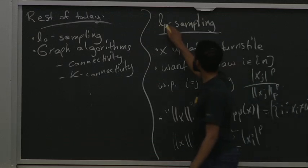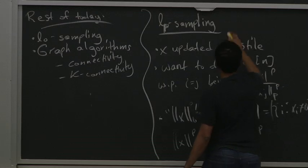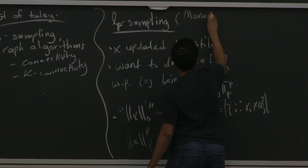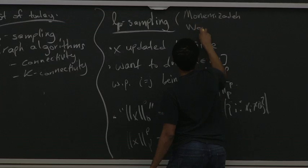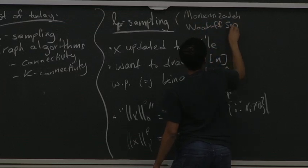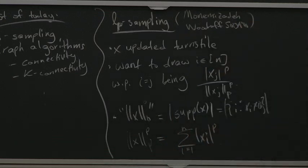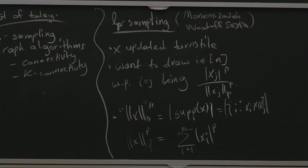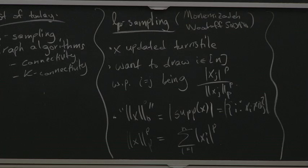Lp sampling for general p was first solved by Monemizadeh and Woodruff at STOC 2010. People already knew it was quite helpful — for example, L2 sampling gives a simple algorithm for Lp norm estimation for p > 2. There's been more work on various p's since then; today I'll show L0 sampling using a different algorithm.